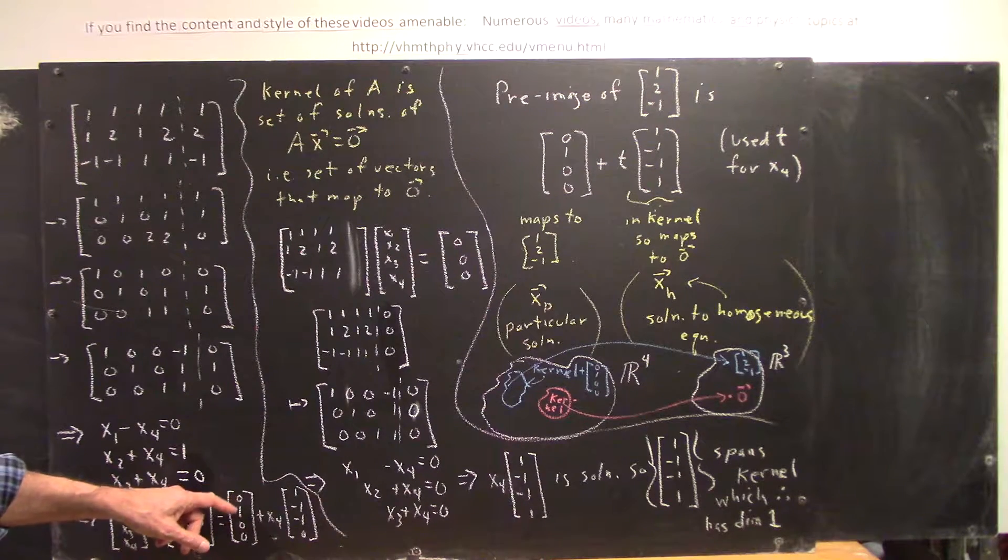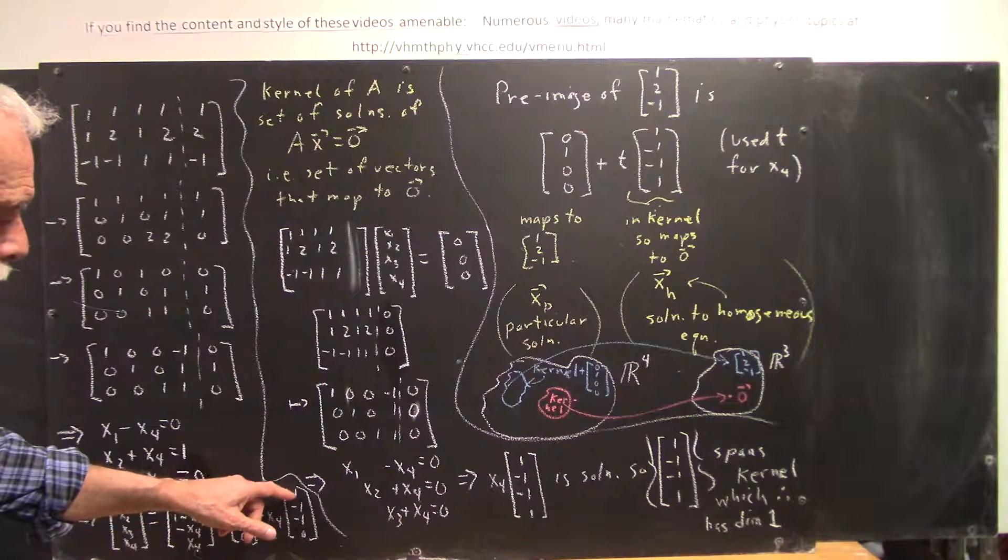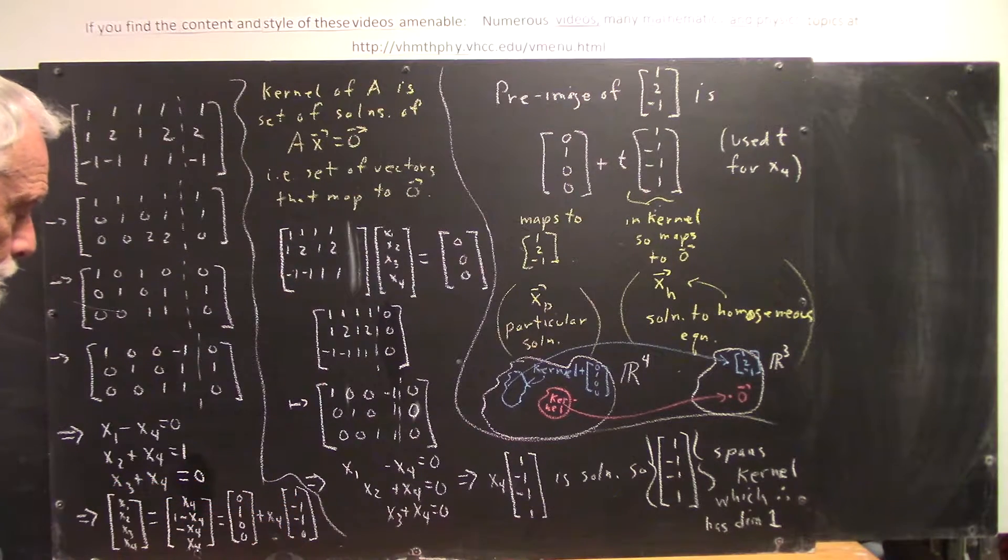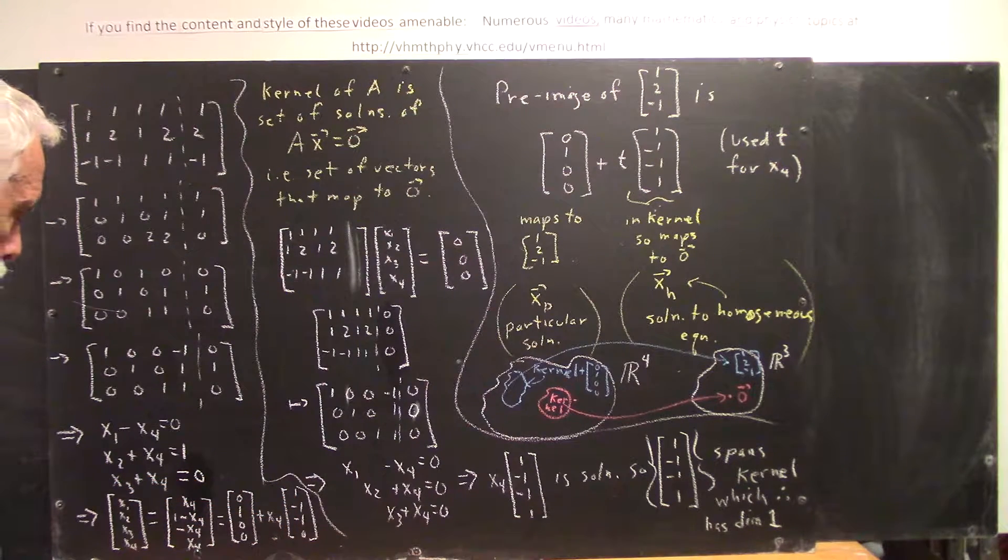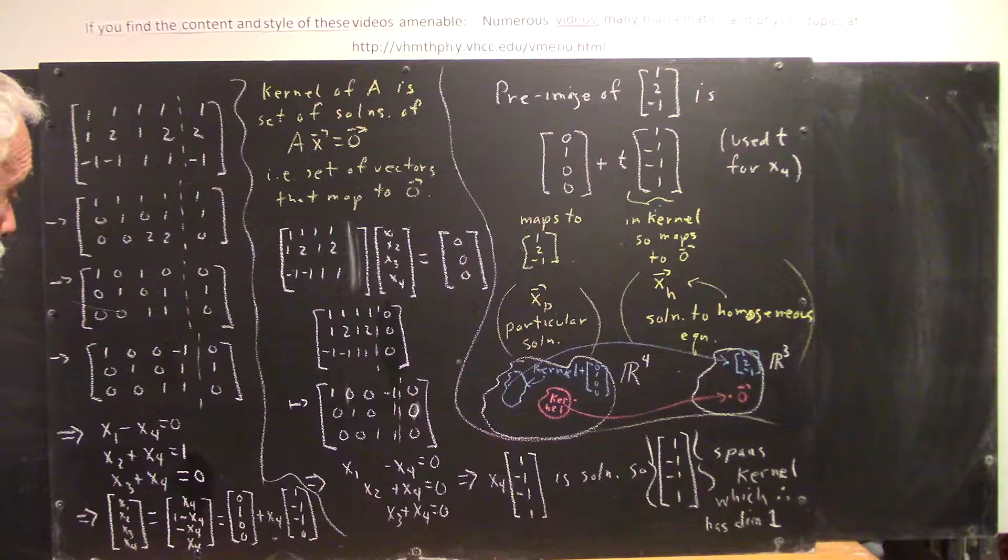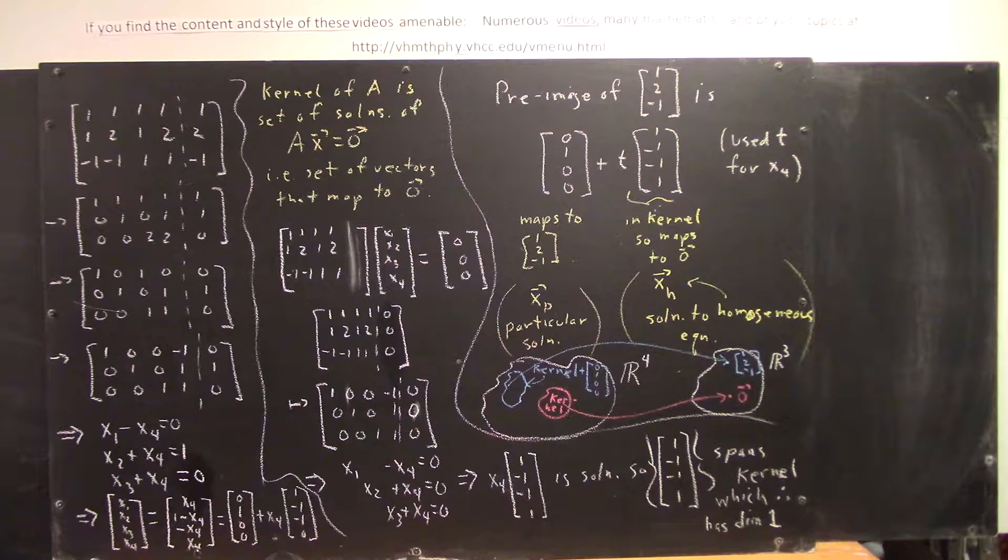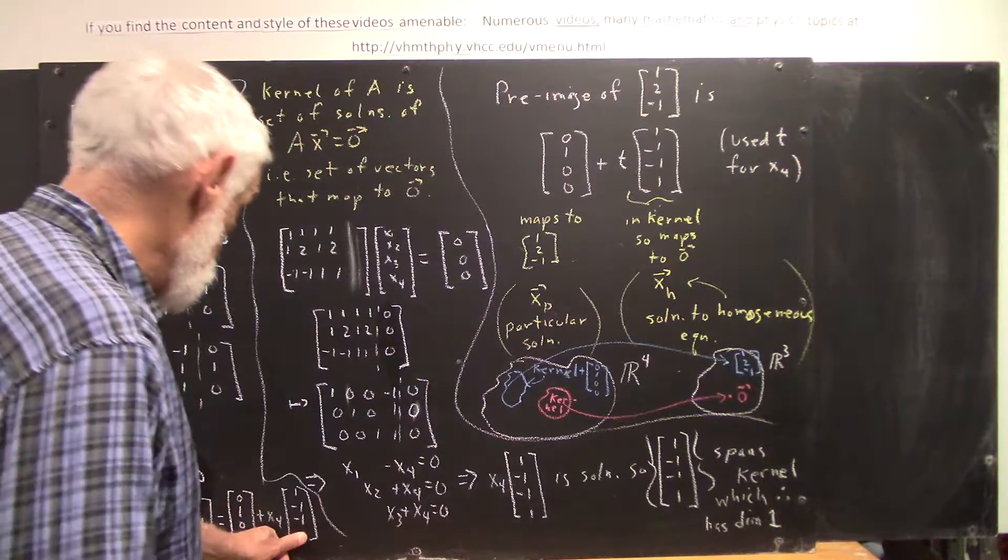We conclude that then x1, x2, x3, x4 has a form 0, 1, 0, 0, plus x4 times 1, negative 1, negative 1, 0. And I think that's supposed to be 1, negative 1, negative 1, 1, not 1, negative 1, negative 1, 0.